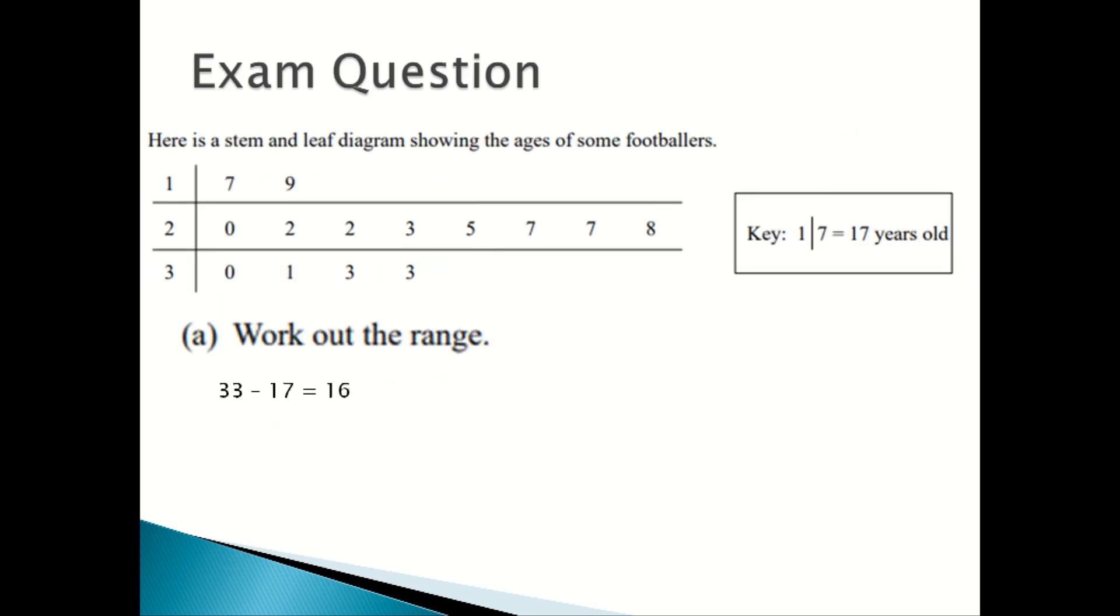Work out the range. So the largest number in this diagram is 33, and we subtract 17, which is the smallest number, which gives us 16. So the range is 16 years.